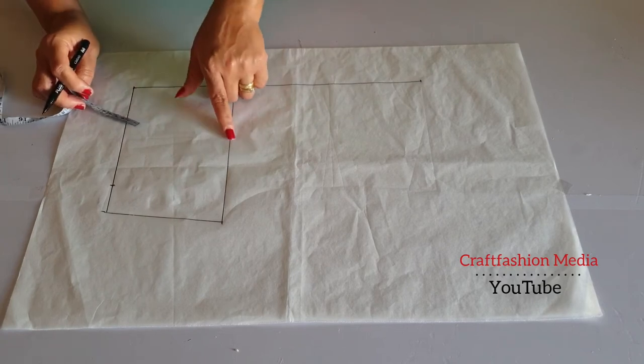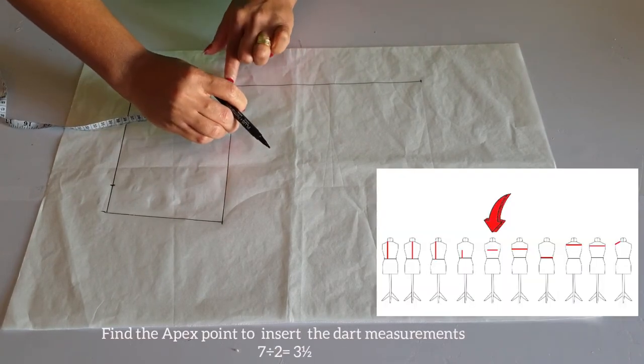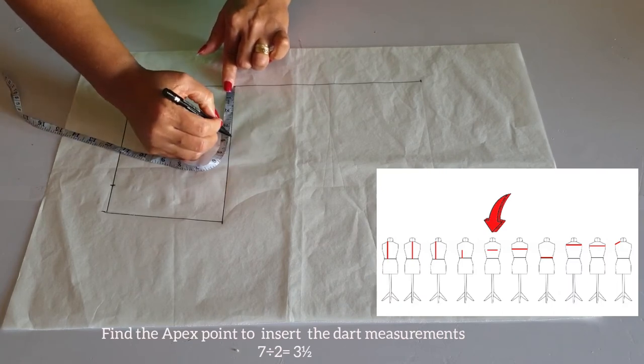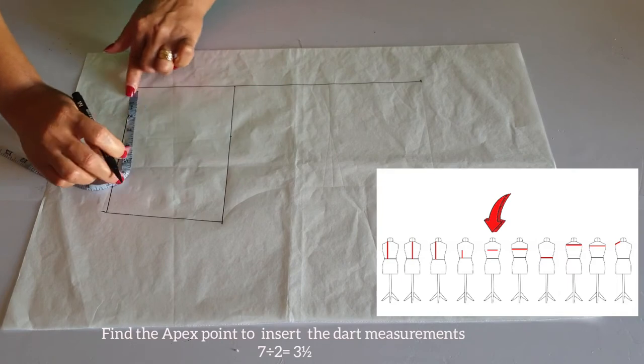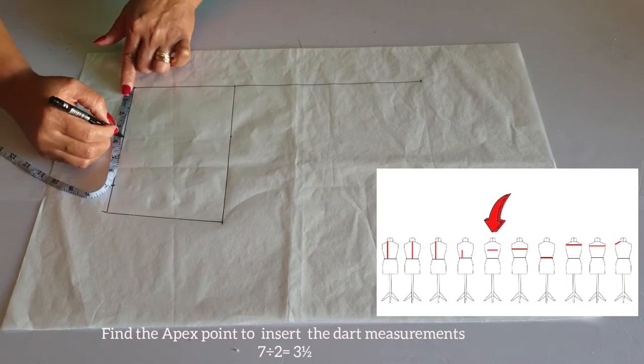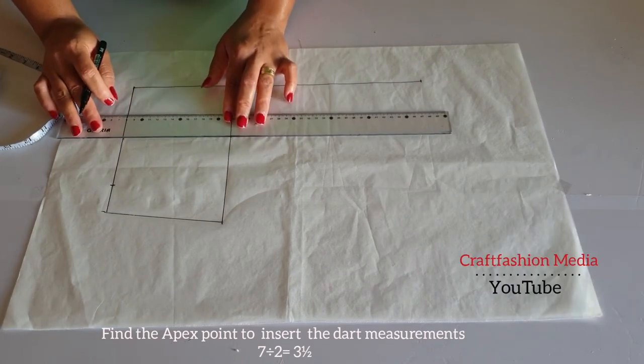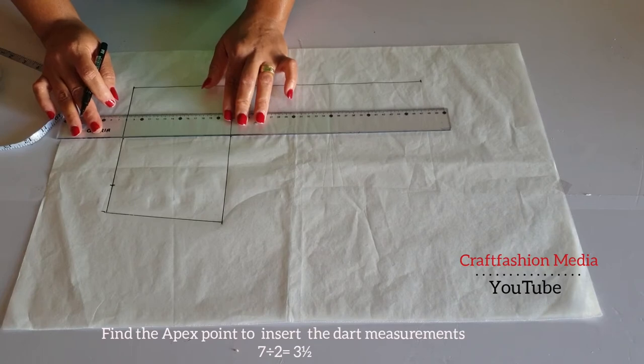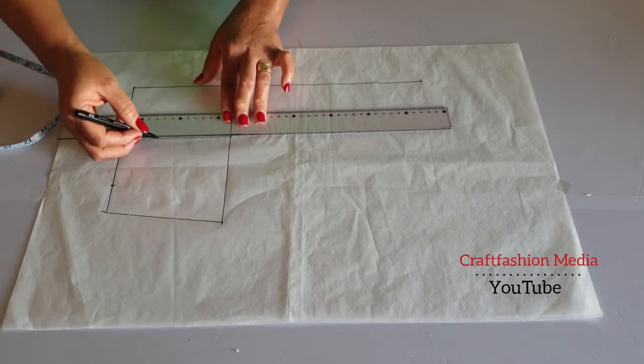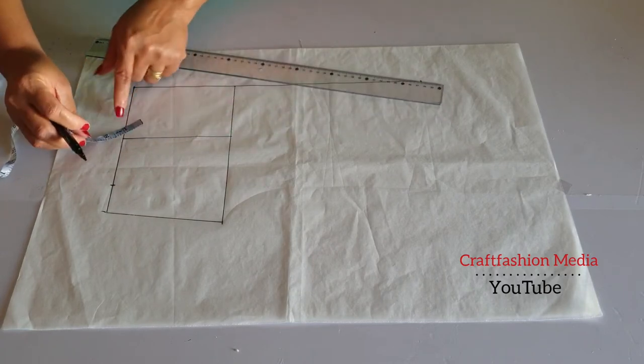Now, let's place our darts in its location. So I'm going to use my apex point that is in between my apex, which is 7 inches divided by 2. That will give me 3.5. And I will mark 3.5 from the center back line. Then connect with my stretch ruler.